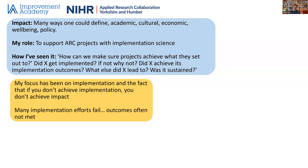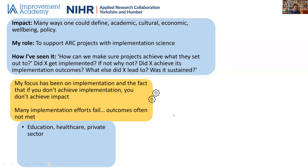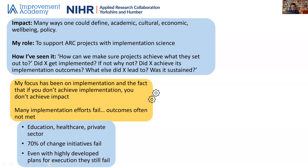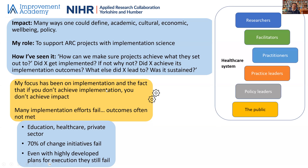We know many implementation efforts fail, so a lot of outcomes are often not met and we're not having the impact we'd like. We see this across the education sector, the healthcare sector, and the private sector. We know from some work that 70% of change initiatives fail, and even when you've got a highly developed plan for execution, you're still getting a high failure rate. So what can we do about this?